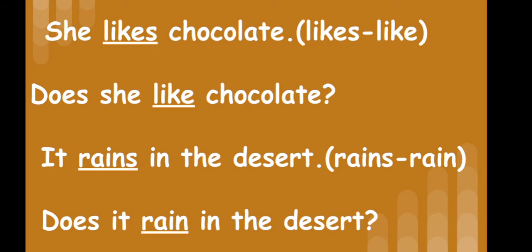'She likes chocolate' — she stands for one person, so we use does. Likes changes to like. Does she like chocolate? 'It rains in the desert' — it is also singular. Does it rain in the desert? Rains changes to rain. When we use does, the verb changes to the base form — that is, we remove the s or es.